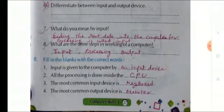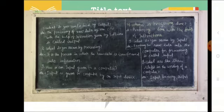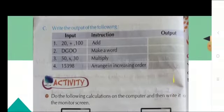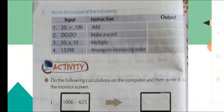Uske baad yeh dekhenge, C jo hai yeh kya hai, write the output of the following. C aapko yaha per output likhna hai. Input yeh kya, computer ko humne bola add karna kya, 20 or 100. Hum mein kya instruction mila hai, usko add karna ka. Input humne dala 20 plus 100, instruction kya diya, usko add karna ka.